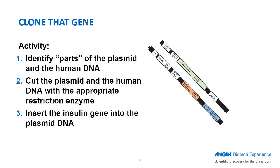For a physical illustration of the cut and paste nature of plasmid recombination, as you would do in labs two and three during the complete series, the ABE program does provide a clone that gene paper activity that students can do to visualize the cut, paste, and recombination of DNA fragments into plasmids. This activity is described in the ABE teacher's guide, which also contains the reproducible master pages.